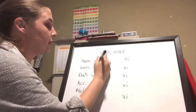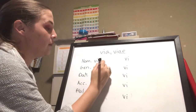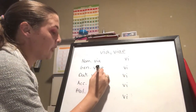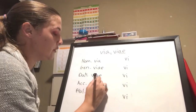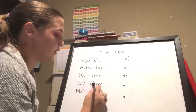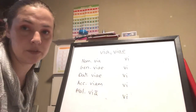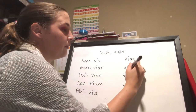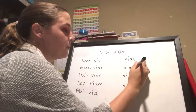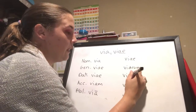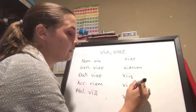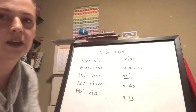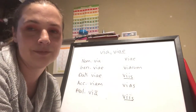We know that our nominative singular is -A. We have -AE in the genitive singular, -AE in the dative singular, -AM in the accusative singular, long -A in the ablative singular. Then -AE, -ARUM, -IS, -AS, -IS. These two are the ones that students look at and think can't be right — but they are.